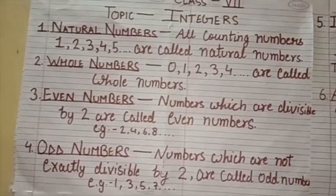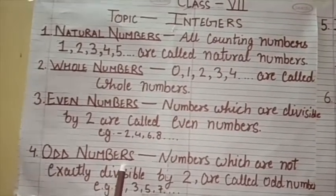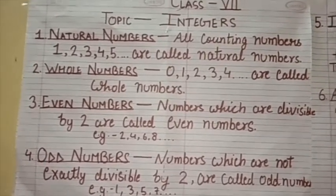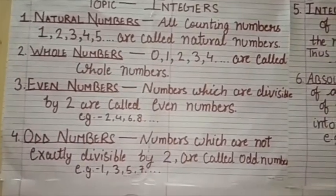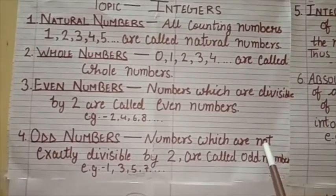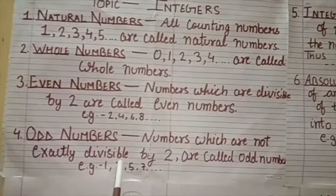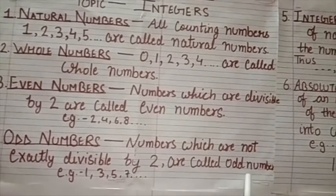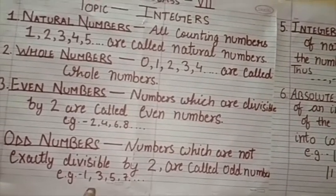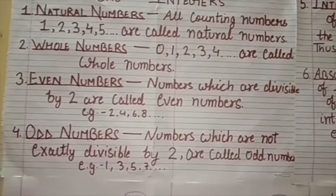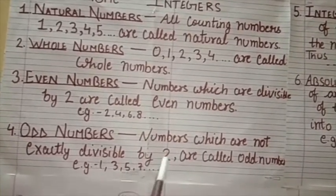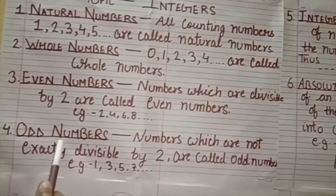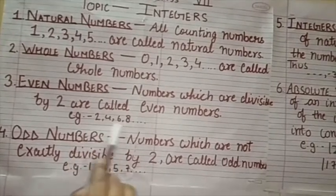Next is odd numbers. Odd numbers क्या होते हैं? Numbers which are not exactly divisible by 2 are called odd numbers. For example, 1, 3, 5, 7 — that's odd. यानि जो numbers 2 से divide नहीं होते हैं वो odd numbers होते हैं। और जो 2 से divide हो जाते हैं वो even numbers होते हैं।